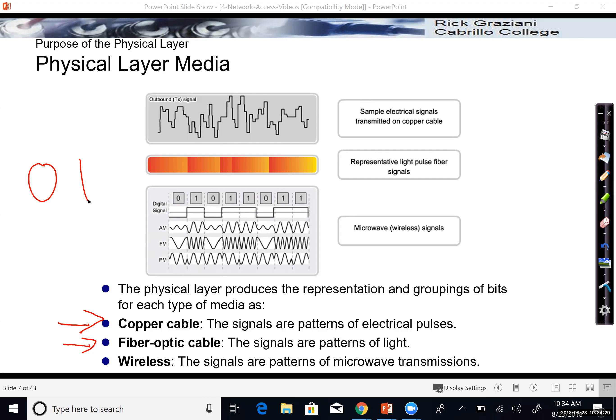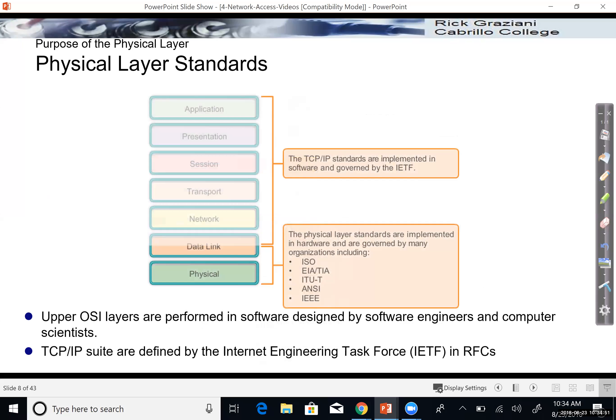Remember, we're going to talk about this in a moment here, but bits are all represented by a 0 or a 1. And we'll talk more about that when we get into binary if you're not already familiar with it. But how do you convert those 0s and 1s to some kind of physical signal that can be transmitted? And there's also wireless. Wireless are signals or patterns of microwave transmissions, wireless frequencies.